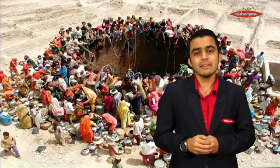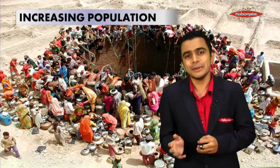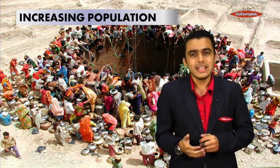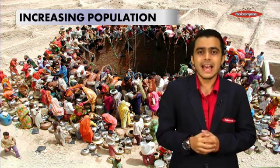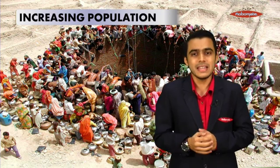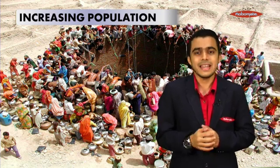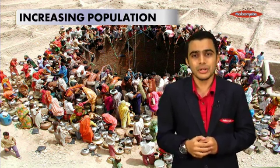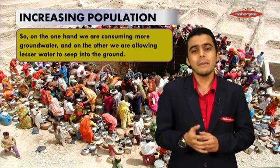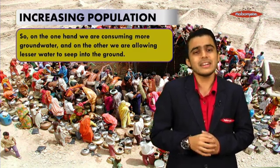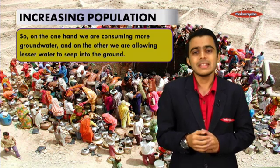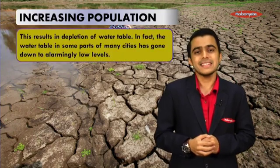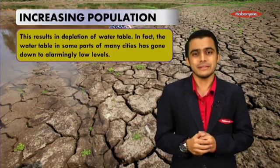Let us understand how increasing population leads to depletion of water table. When population increases, the number of housing units also increases. As housing demand goes on increasing, construction areas go on increasing, and in construction areas we require a lot of groundwater. So on one hand we are consuming more and more groundwater, whereas on the other hand we are not allowing enough groundwater to seep into the earth's crust.